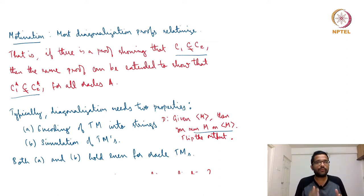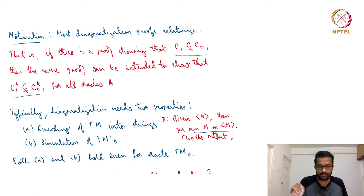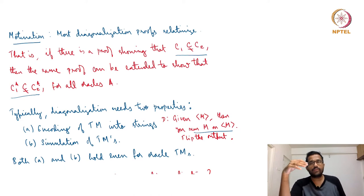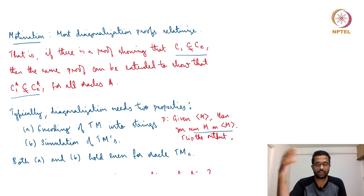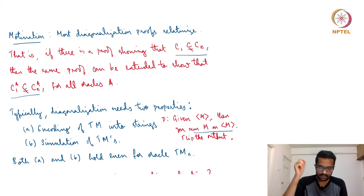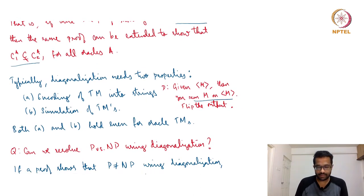Consequently, any proof that uses diagonalization — you could just mildly tweak the Turing machines involved in those proofs and get a proof for the relativized version of the classes as well. If there is a proof that says C1 is contained in C2 using diagonalization, you can use the same proof to show C1^A is contained in C2^A. If it says C1 is not contained in C2, the same proof works to show C1^A is not contained in C2^A.